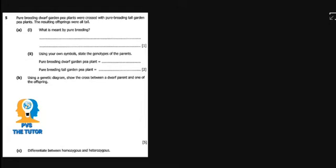The question says pure breeding dwarf garden pea plants were crossed with pure breeding tall garden pea plants. The resulting offspring were all tall. Before we go to the question, we need to understand the statement.